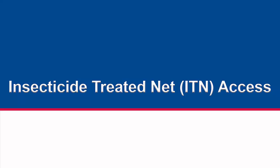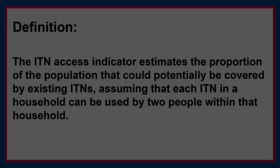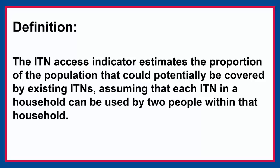This video examines access to insecticide-treated nets, or ITNs. This is a new indicator that provides an exciting look at population-level access to nets. The ITN access indicator estimates the proportion of the population that could potentially be covered by existing ITNs, assuming that each ITN in a household can be used by two people within that household.